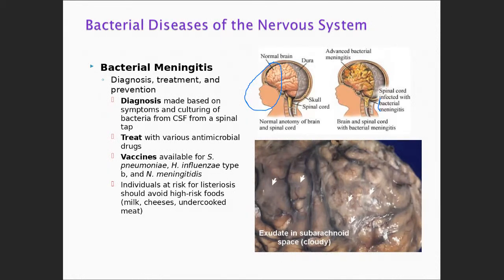There are vaccines for three of the most common bacteria that cause meningitis: Neisseria meningitidis, Streptococcus pneumoniae, and Haemophilus influenzae type B. You need to know that for the exam. We're going to talk about viruses in a little bit.